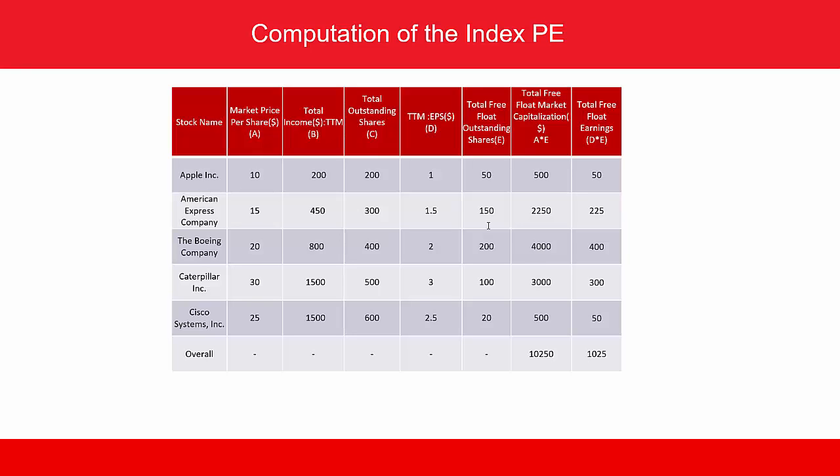The next column is the total free float market capitalization, obtained by multiplying the market price per share by the total free float outstanding shares — that is column A times column E. For Apple, it is 10 times 50, which is 500. The next column is total free float earnings, obtained by multiplying the earnings per share (column D) by the total free float outstanding shares (column E), so it is 1 times 50, which is 50 for Apple.